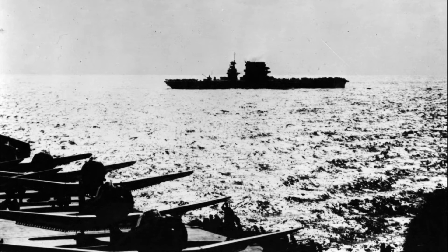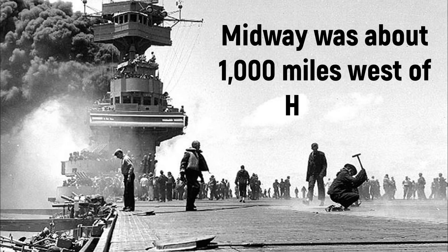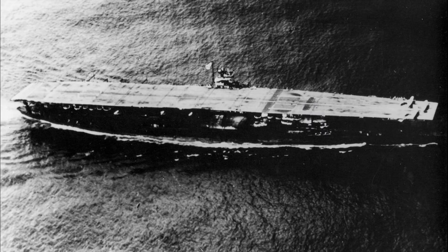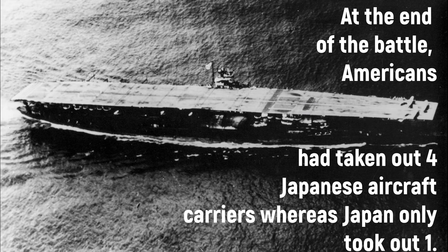A change took place in the Pacific portion of the war when the Battle of Midway began. Midway was about 1,000 miles west of Hawaii, and Japan wanted to take out the rest of the American fleet in that area. America's planes were able to shoot down the Japanese given long distances, which gave them an advantage. Japanese fighters managed to take out a mass of torpedo bombers, but a second wave of American planes were able to hit three Japanese carriers. At the end of the battle, America had taken out four Japanese aircraft carriers whereas the Japanese had only managed to destroy one. This battle meant the U.S. finally had control of the Central Pacific.